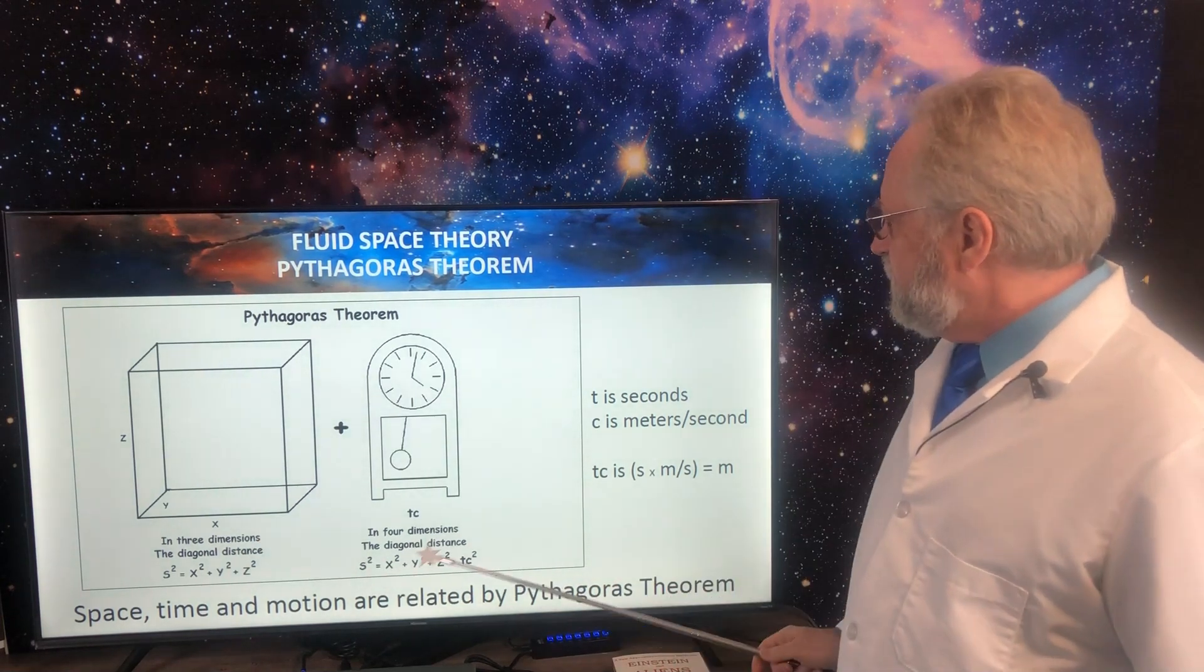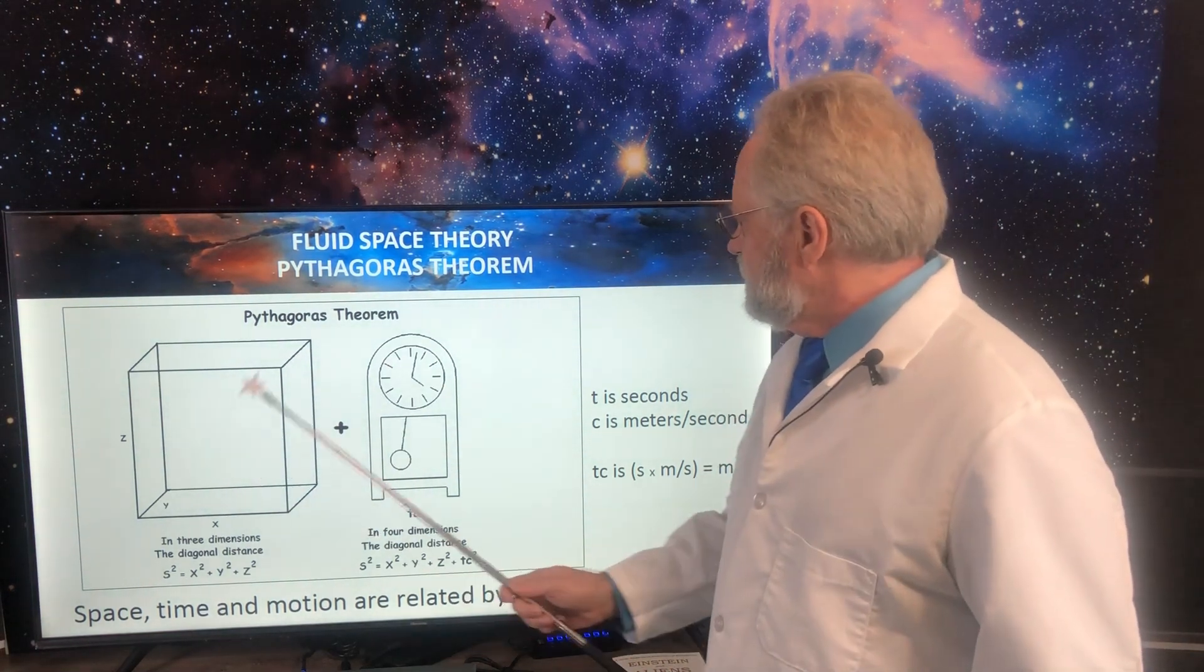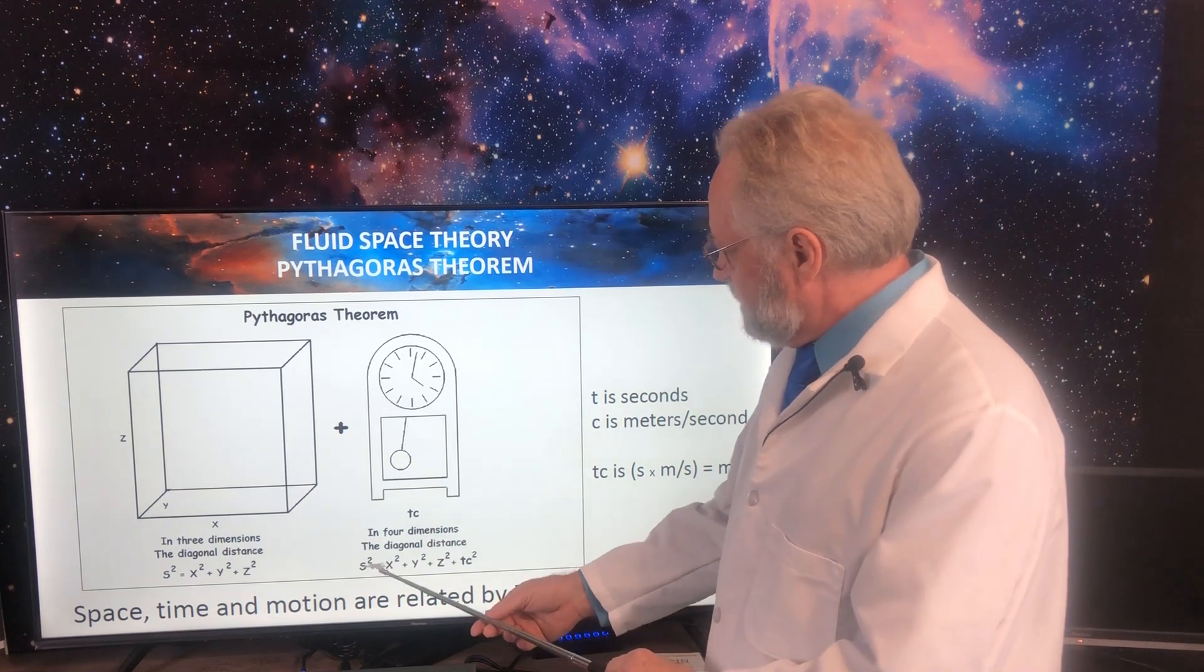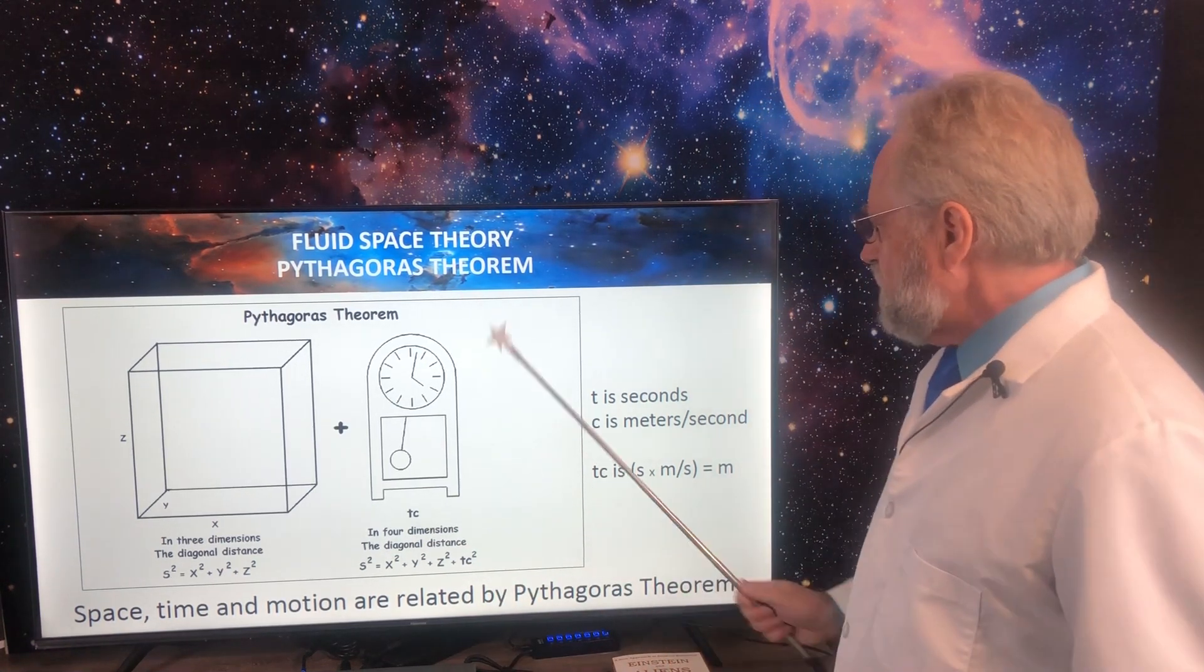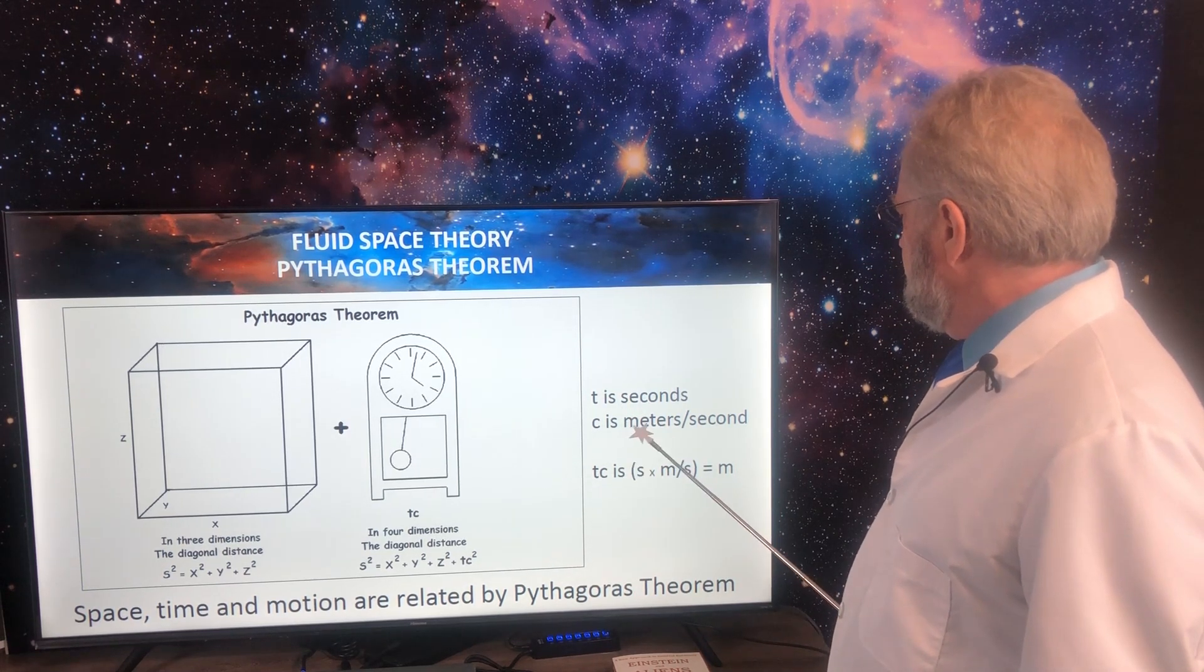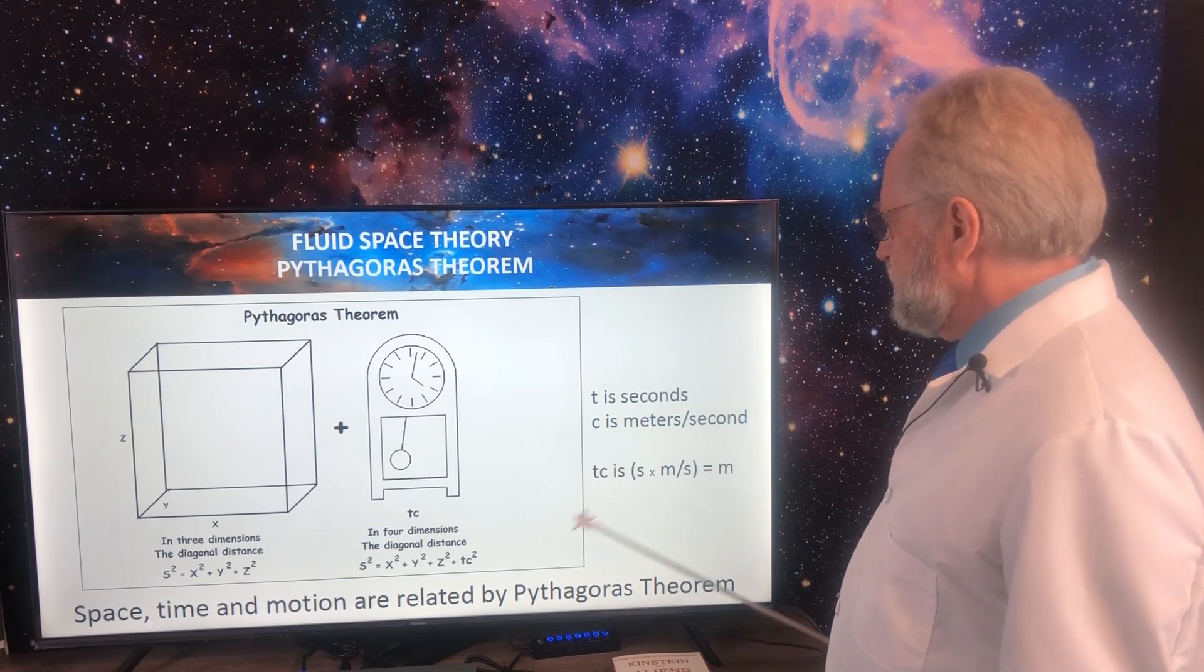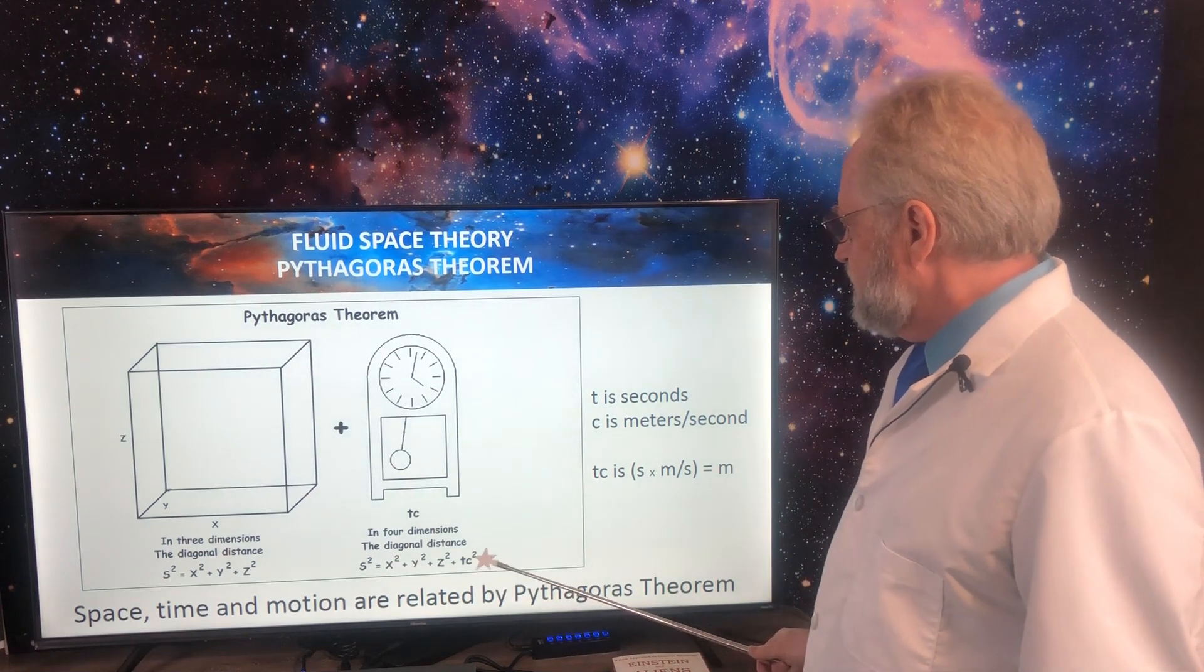Now, the Pythagoras theorem also works in four dimensions. So to describe a four-dimensional world with three dimensions of space and a dimension of time, we add the term TC. And then the square of all the components still add up to what's called the space-time interval, the square of the space-time interval. So, but there's a slight hiccup with that is that the time is in seconds, and all the lengths are in meters. So we multiply time by the speed of light, which is in meters per second. And that turns this quantity to have the same units as the length. So everything's expressed in terms of meters.